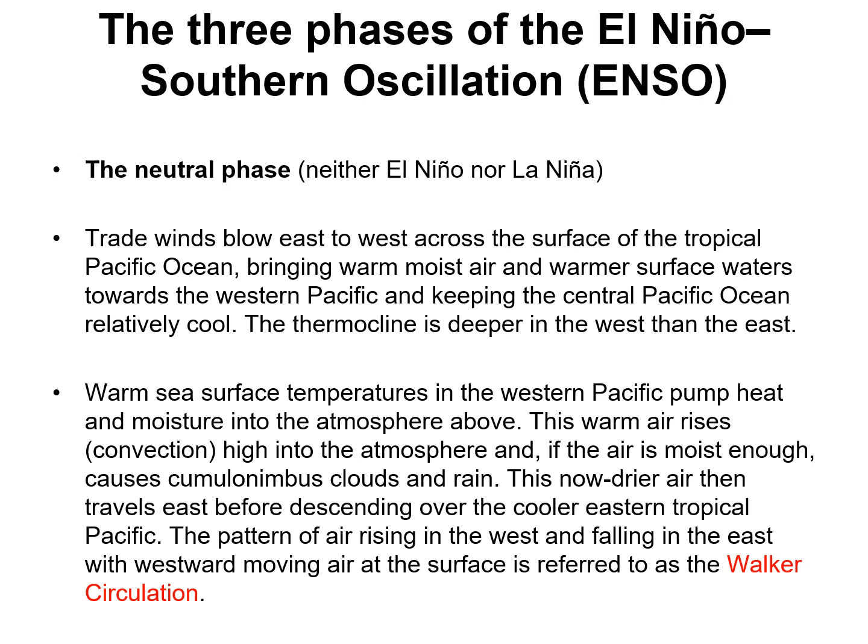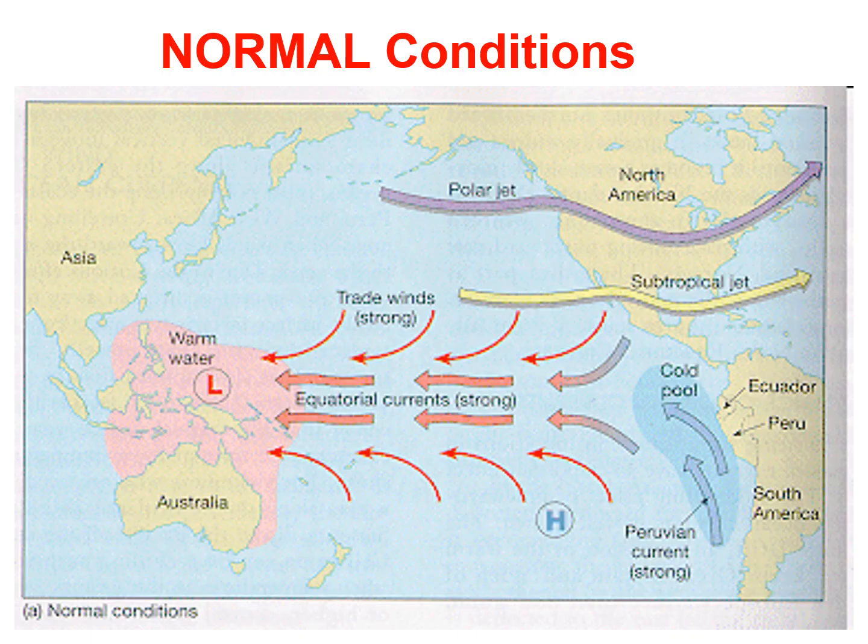During especially strong ENSO events, such as in 1982-83 and 1997-98, the easterly trades may actually become westerly. As these winds push eastward, they drag surface water with them, raising sea level in the eastern Pacific and lowering it in the western Pacific. The eastward-moving water gradually warms under the tropical sun, becoming as much as 6 degrees Celsius, or 11 degrees Fahrenheit, warmer than normal in the eastern equatorial Pacific.